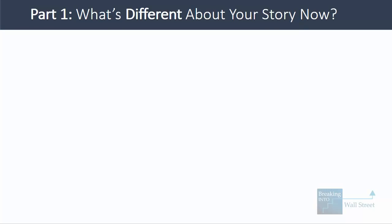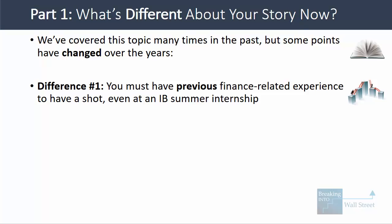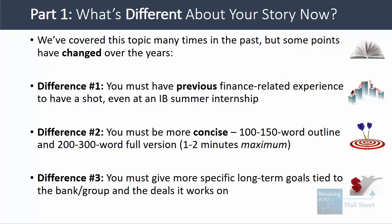What's different about your story now as of 2017? We've covered this topic many times in the past, but a few points have changed. First, these days you must have previous finance-related experience to have a shot, even at an investment banking summer internship. You also have to be more concise — we now recommend a 100 to 150 word outline and a 200 to 300 word full version, so you speak for a maximum of one to two minutes. Third, you must give more specific long-term goals, and these goals have to be tied to the bank or group and the deals that it works on.